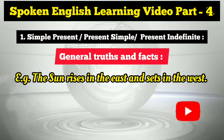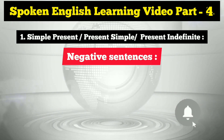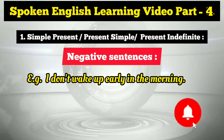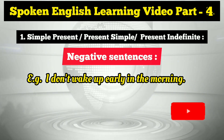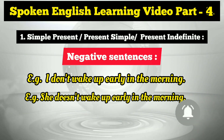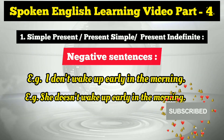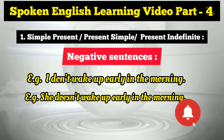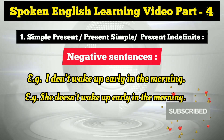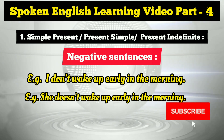We can also use the simple present tense to make negative sentences. For first person, we use 'don't': 'I don't wake up early in the morning.' For third person singular number, we use 'doesn't': 'She doesn't wake up early in the morning.' So 'I don't wake up' versus 'she doesn't wake up.'